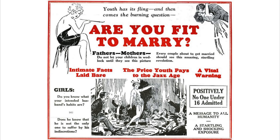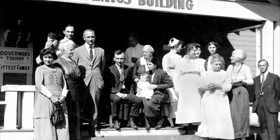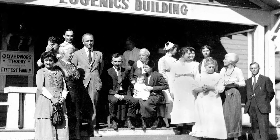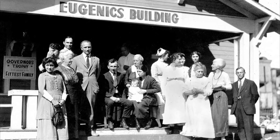They held conferences, printed adverts for eugenic marriages, and published their research in journals and newspapers. The campaigns worked. In 1907, the state of Indiana passed the first compulsory sterilization law in the world. By 1924, 15 different states had passed similar legislation. These laws were passed in the hope that those deemed unfit to reproduce and the mentally ill wouldn't be able to pass on their inferior genes to the next generation. A 1937 Fortune magazine poll found that two-thirds of Americans supported eugenic sterilization of mental defectives, and 63% supported sterilization of criminals.